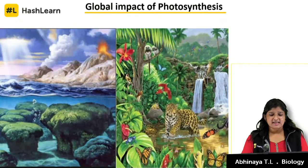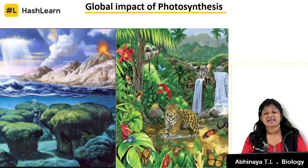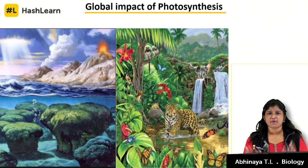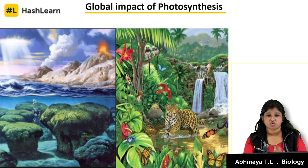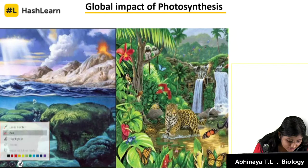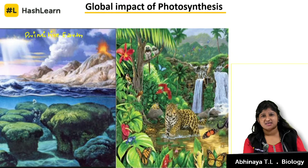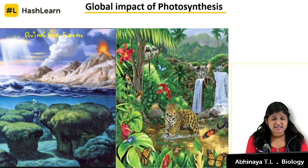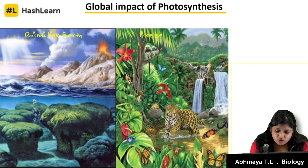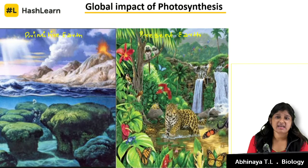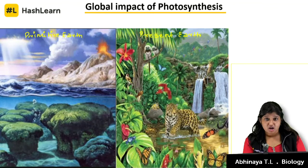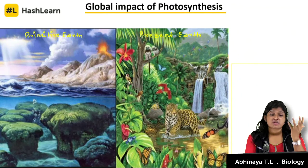This is the global impact of photosynthesis. I have put two pictures on the slide — on the left is the primitive earth. There were no plants, no oxygen in the atmosphere. What led to the evolution from primitive earth to present earth? Billions of years it took. The prime process was the cyanobacteria — they were respiring, taking up oxygen and giving out carbon dioxide, and also photosynthesizing.